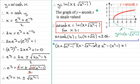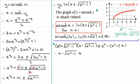So if I make x minus the root of x squared minus 1 the subject, it is going to be identical to 1 divided by x plus the root of x squared minus 1.